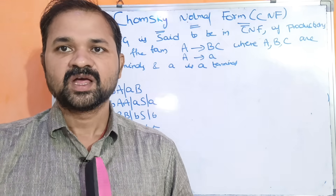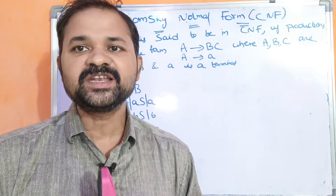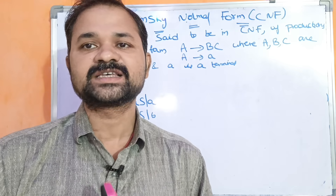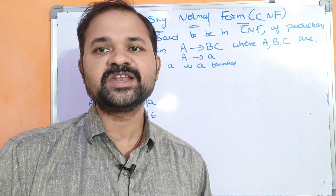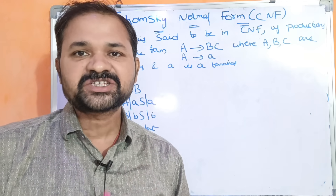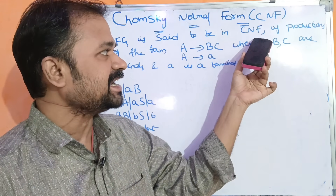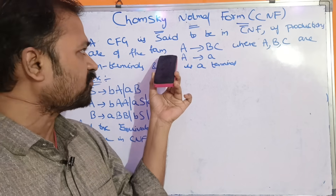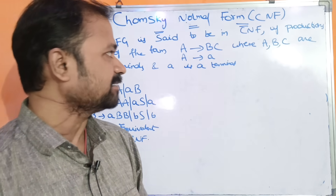In this video we are going to discuss about Chomsky Normal Form, in short CNF. A context-free grammar is said to be in CNF if productions are of the form A implies BC, or A implies a.